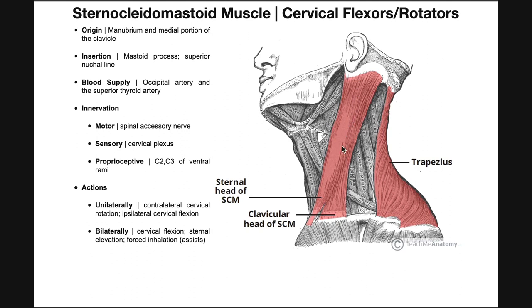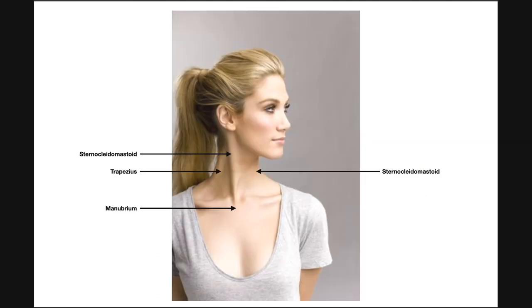Here's your sternocleidomastoid muscle. This is one of the easiest muscles to palpate, and it's easiest to see when the neck is rotated. This particular person is rotating their head or neck to the left. Remember, we're looking anteriorly, so this is the left side and here's the right side. She's rotating her head to the left, and that causes you to be able to see the right sternocleidomastoid very easily. When you're looking to palpate this muscle, you rotate your head in one direction and the opposite — contralateral — sternocleidomastoid becomes very easy to see.